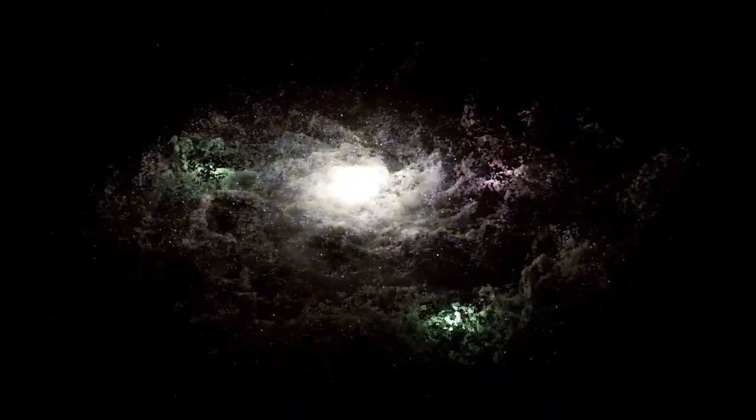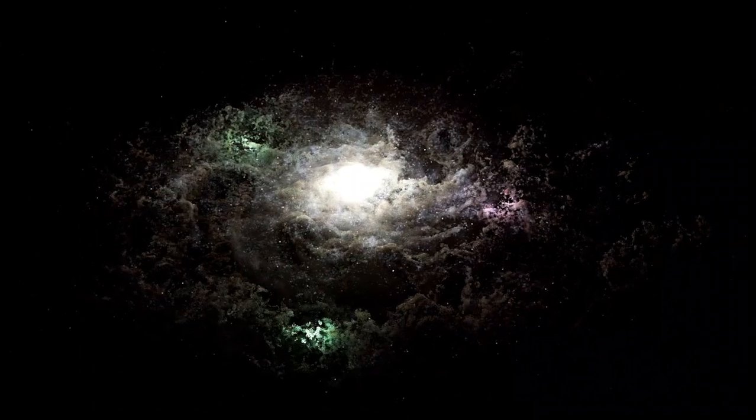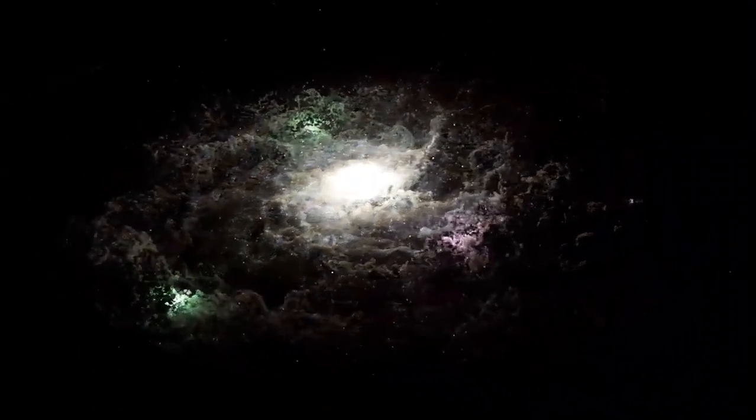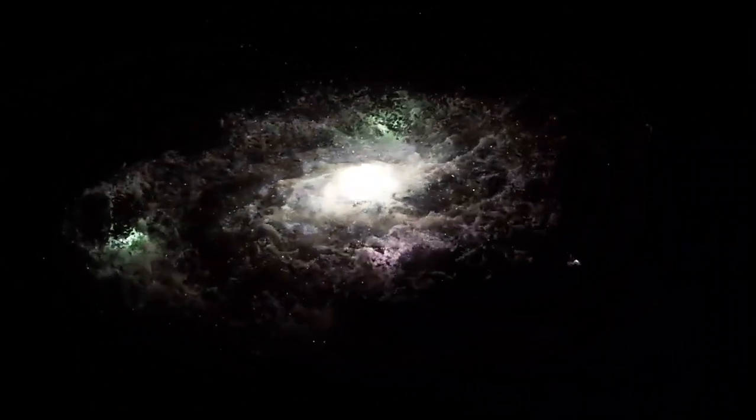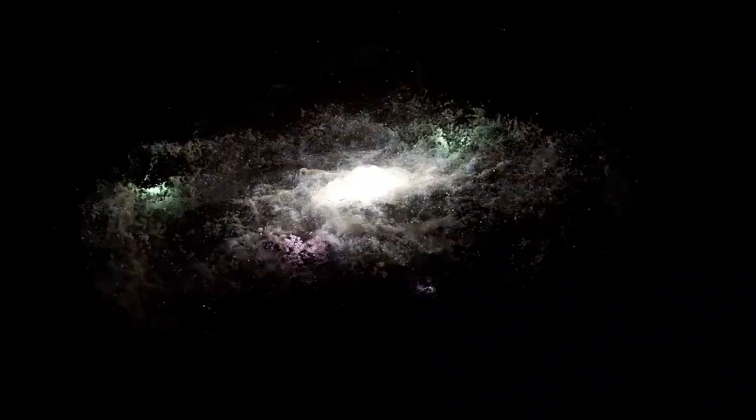The image of Proxima b captured by the JWST is a testament to the telescope's extraordinary capabilities. It reveals the planet's surface with remarkable clarity, showcasing its diverse terrain, including potential continents.